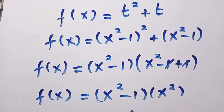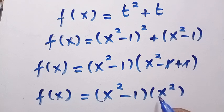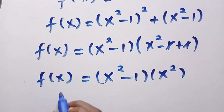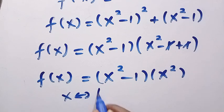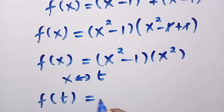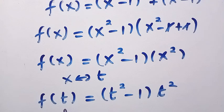I'm not going to expand this further. What I will do is get f of t. So I replace every single x with t, giving us f of t equals t squared minus 1, multiplied by t squared. At this point, we have gotten f of t.